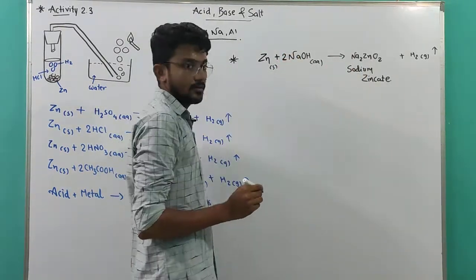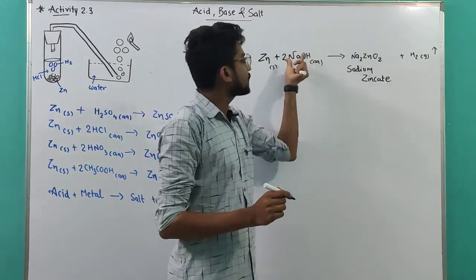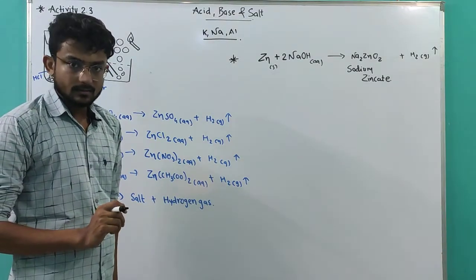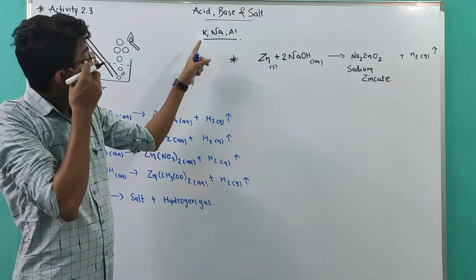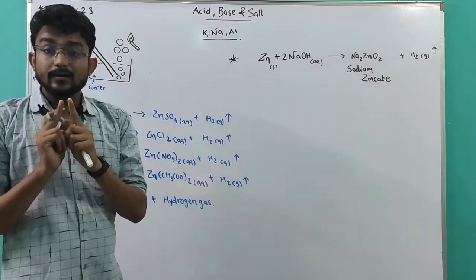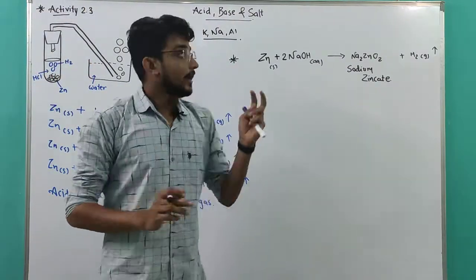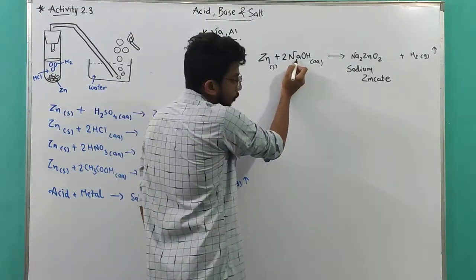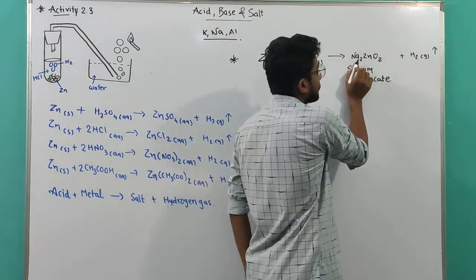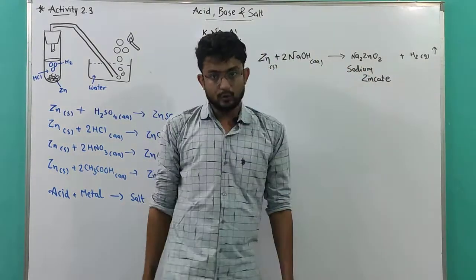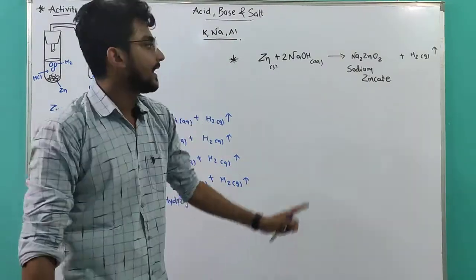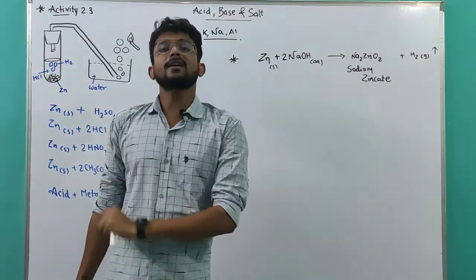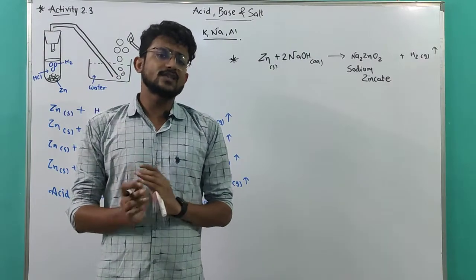Balancing Zn + 2NaOH → Na2ZnO2 + H2: one zinc, one zinc; two sodium — that's why 2NaOH; two oxygen, two oxygen; two hydrogen, two hydrogen — balanced. Not all metals react with base; this is a special case. If you use KOH instead, you would get K2ZnO2 (potassium zincate).